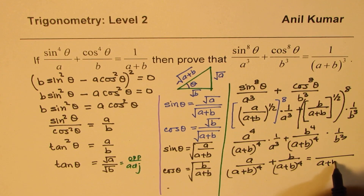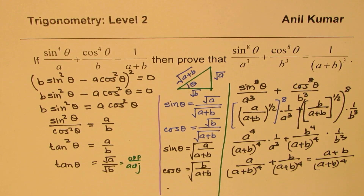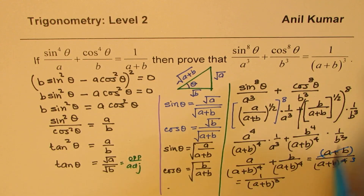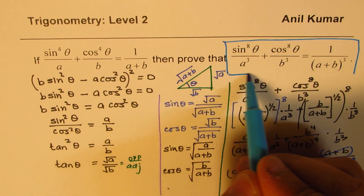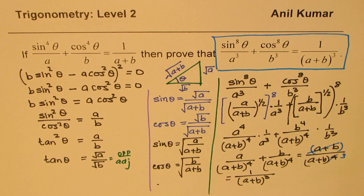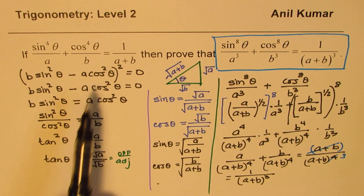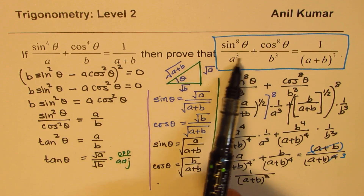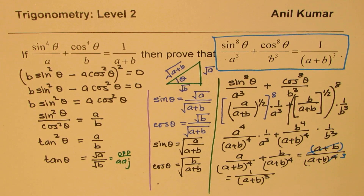We can take the same denominator, which is (a+b)⁴, and the numerator is a plus b. So one of the powers cancels, and we get 1 over (a+b) whole cube. So a+b in the numerator cancels with one factor in the denominator, and we are left with 1 over (a+b)³. That is how we prove it. The important part is we started with the given condition, showed it reduces to tan θ = √(a/b), used the triangle to find sine and cosine, substituted the values, and showed the expression equals 1 over (a+b) cube. Feel free to write your comments, share your views, and if you like and subscribe to my videos, that would be great. Thanks for watching, and all the best.